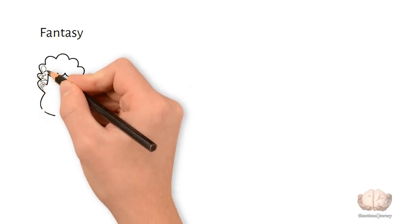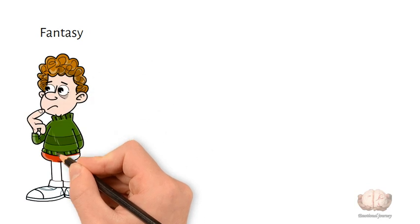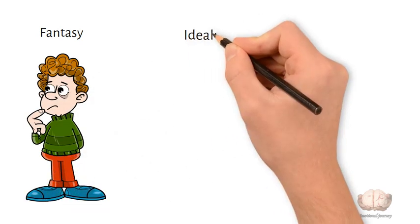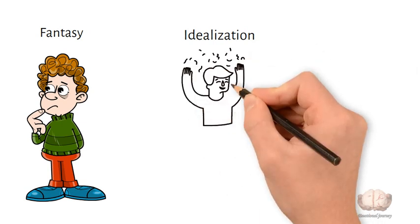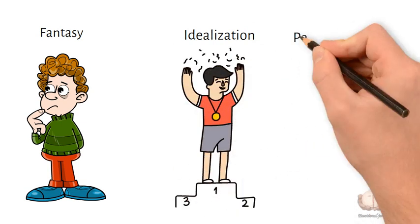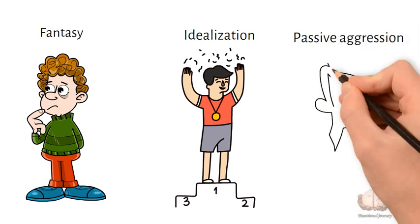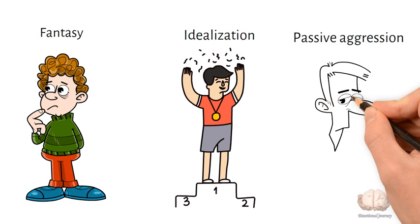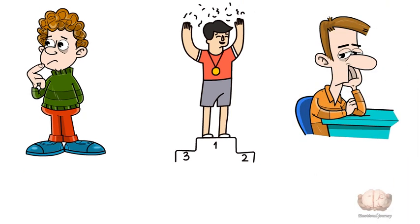Fantasy: retreating from reality into excessive daydreaming or fantasy as an escape. For example, a lonely child with imaginary friends. Idealization: perceiving someone else as having exaggerated positive qualities, common in unhealthy relationships or crushes. Passive aggression: expressing hostility in indirect passive ways instead of direct confrontation. For example, intentionally working slowly or forgetting to do tasks.